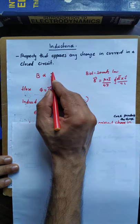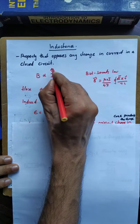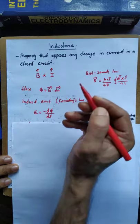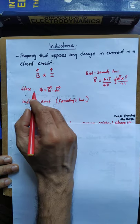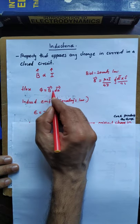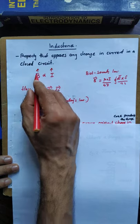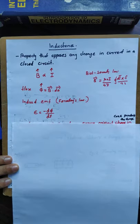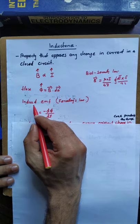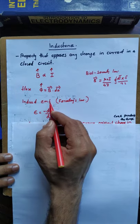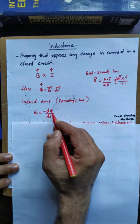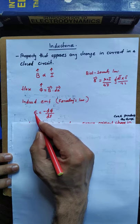If I increase the current in a circuit, the magnetic field will also increase. The flux phi is equal to B dot dA. If the magnetic field increases, phi will also change and increase. According to Faraday's law, the induced EMF is equal to minus d-phi by dt. The rate of change of flux is the reason for the induced EMF.